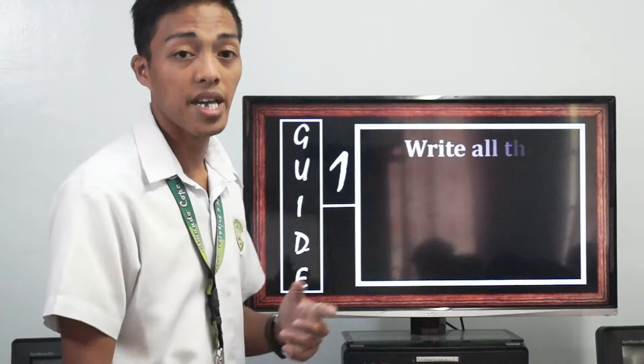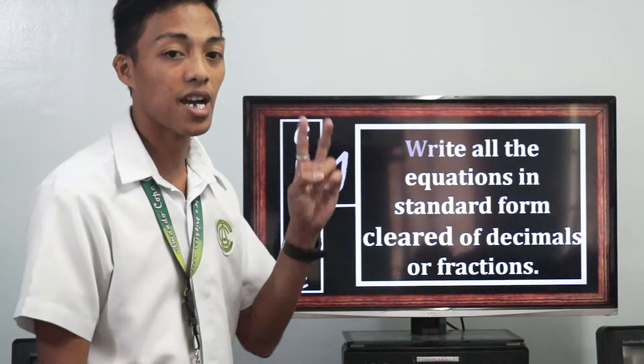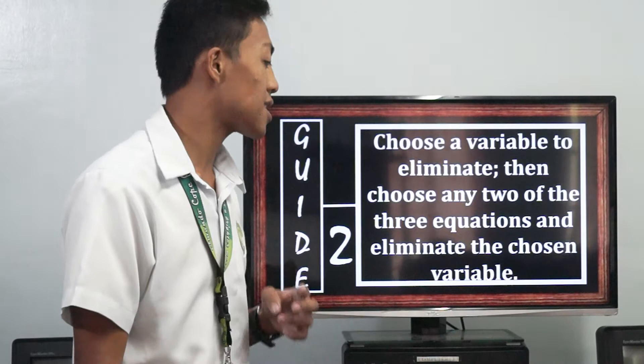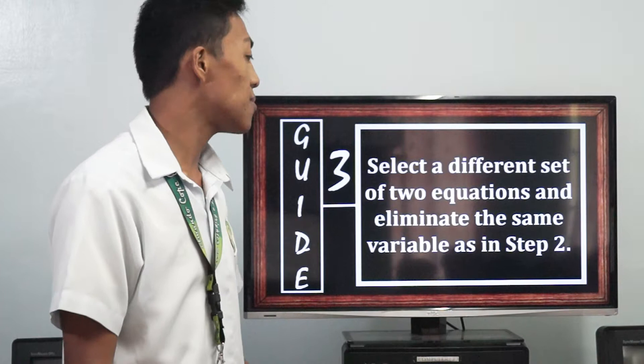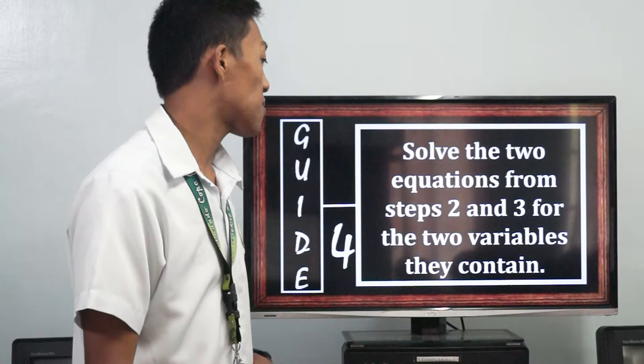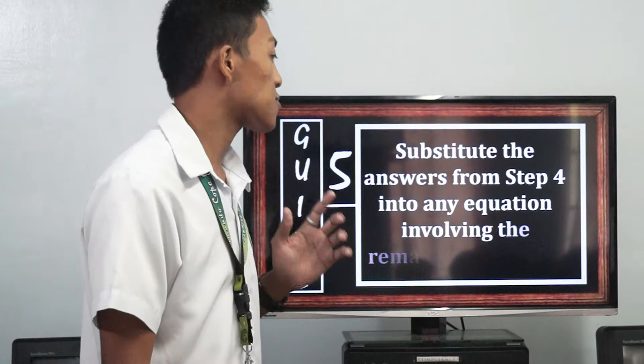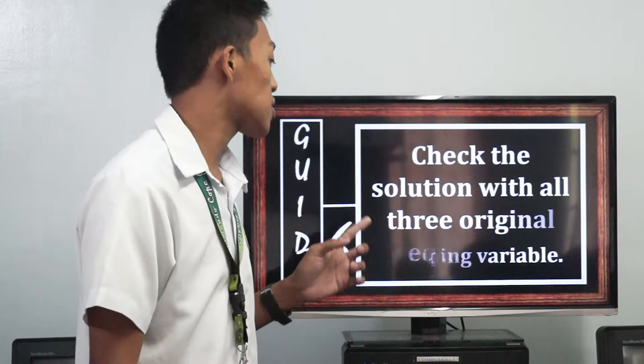Let's use this guide to eliminate x, y, and z. Guide number one: write all the equations in standard form, cleared of decimals and fractions. Guide number two: choose a variable to eliminate, then choose any two of the three equations and eliminate the chosen variable. Guide number three: select a different set of two equations and eliminate the same variable as in step two. Guide number four: solve the two equations from steps two and three for the two variables they contain. Guide number five: substitute the answers from step four into any equation and solve for the remaining variable. Last, check the solution with all three original equations.